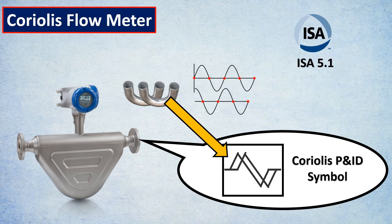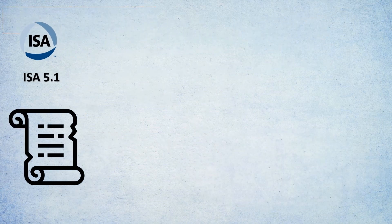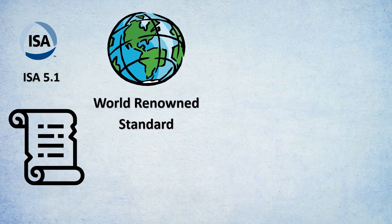All of these amazing symbols are hidden in ISA 5.1. This ISA 5.1 is one of the top world-renowned standards that has been used throughout P&ID preparation.